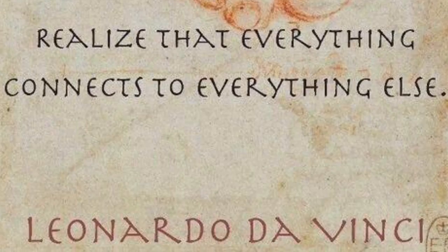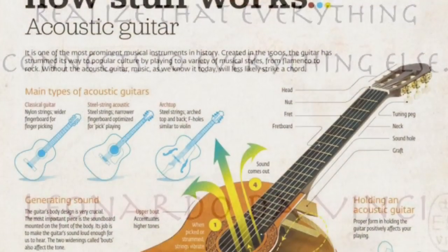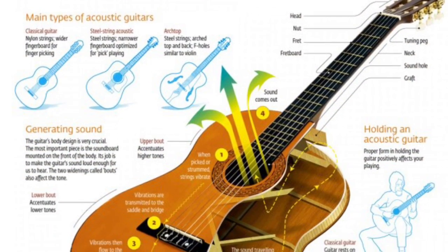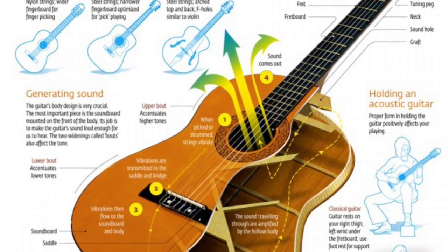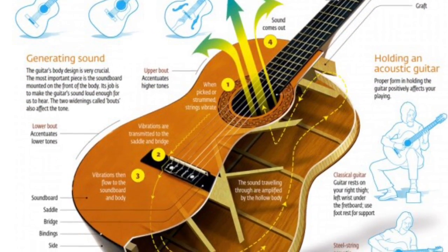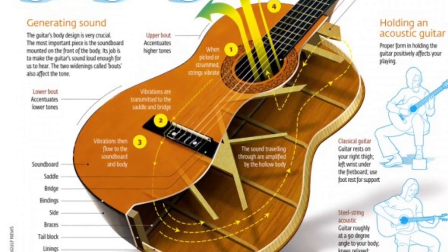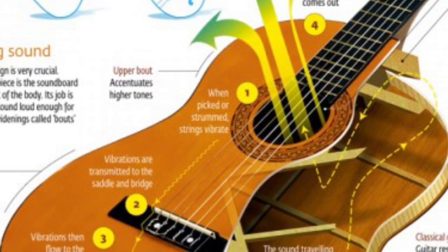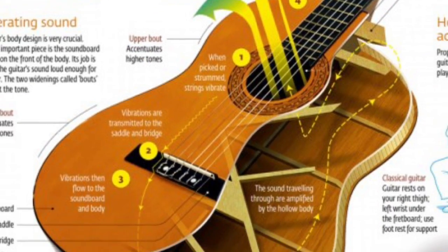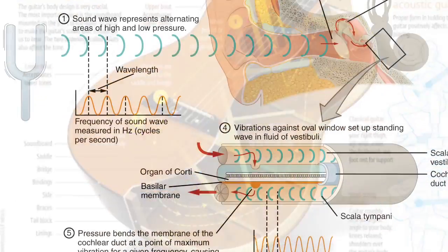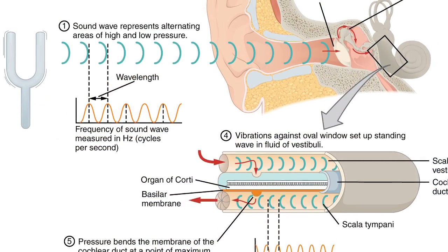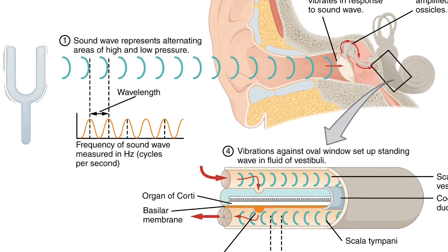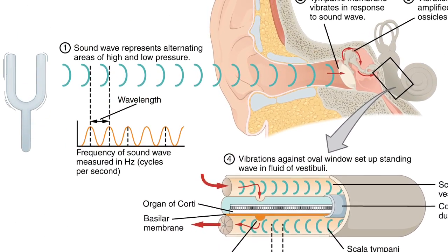The acoustic guitar is a popular instrument and it can be a quite complex scientific specimen. Even in the acoustic guitar's basic physics, there's a lot going on before sound even gets to your ears.